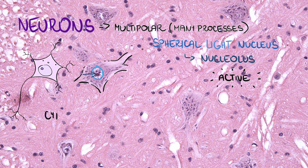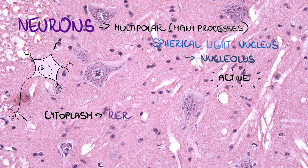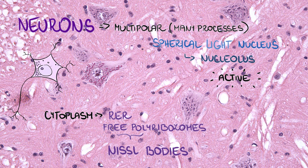Cytoplasm contains rough endoplasmic reticulum and free polyribosomes, and they are organized in Nissl bodies — these basophilic dots, or so-called Nissl substance. That's why the whole cytoplasm of the neuron is described as basophilic.